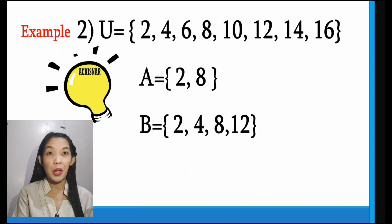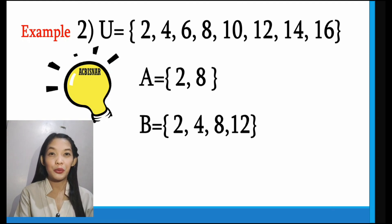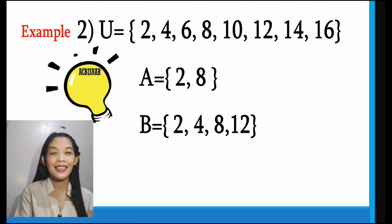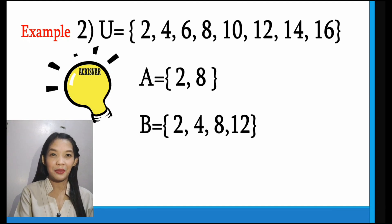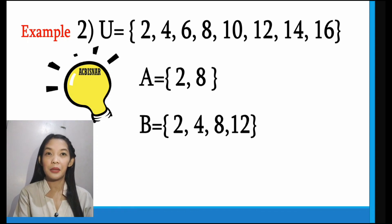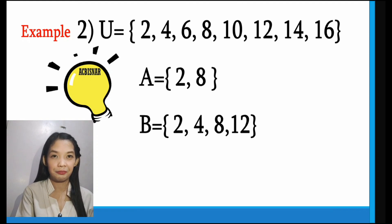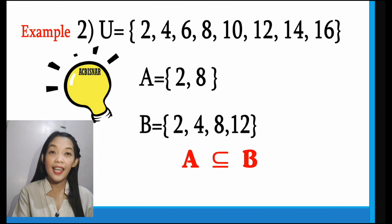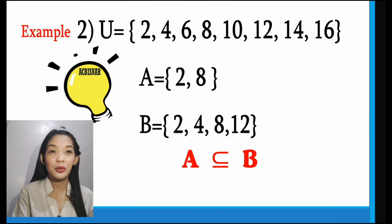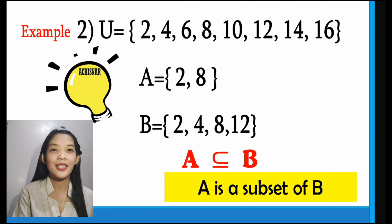Now let us have example number 2. Our universal set has the elements 2, 4, 6, 8, 10, 12, 14, and 16. Set A has the elements 2 and 8, while set B has the elements 2, 4, 8, and 12. Now, which is the subset — A or B? You have to remember that if every element can be found in another set, then that is the subset. From here, we can say that A is a subset of B, because the elements 2 and 8 can also be found in B. So we read this as A is a subset of B.